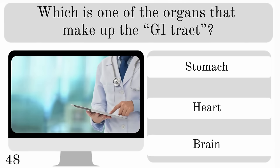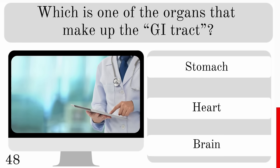Which is one of the organs that makes up the GI tract? The stomach, heart or brain? The correct answer is the stomach.